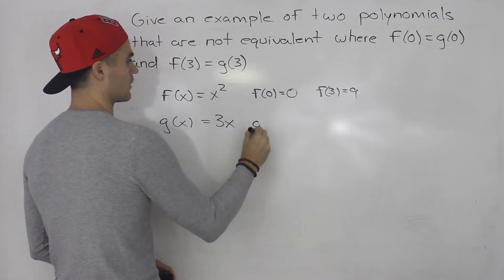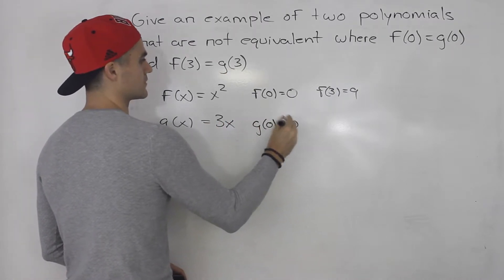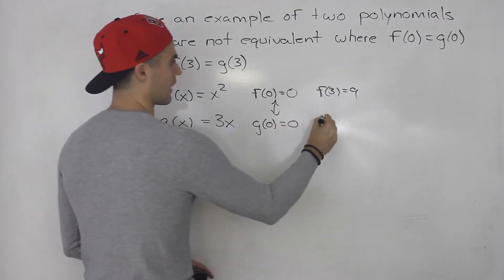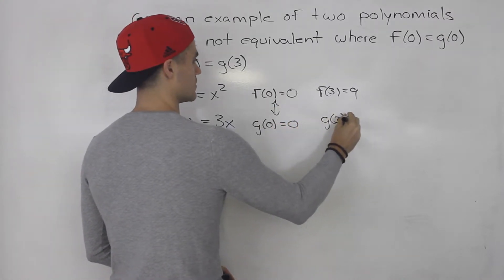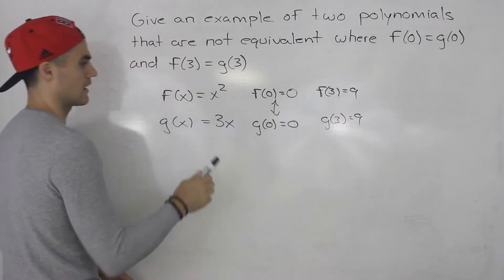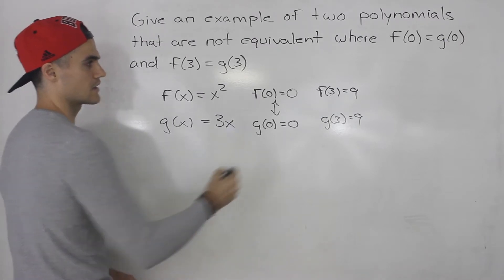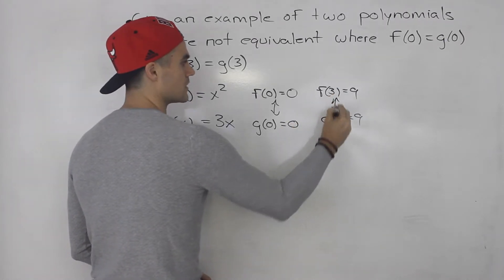Then same thing here we'll have g of 0 is equal to 0 which makes these two equivalent. And then g of 3 would be 9 because 3 times 3 is 9. So both of these would be equivalent.